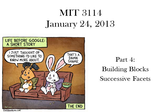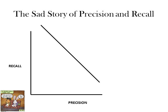Part four: two methods of dealing with precision and recall — the building block strategy and the successive facet strategy. As we said in the previous part, recall and precision tend to be inversely related, which means you can't get one and the other at the same time. So what a searcher will typically do is decide to start in one direction and then inch towards the other.